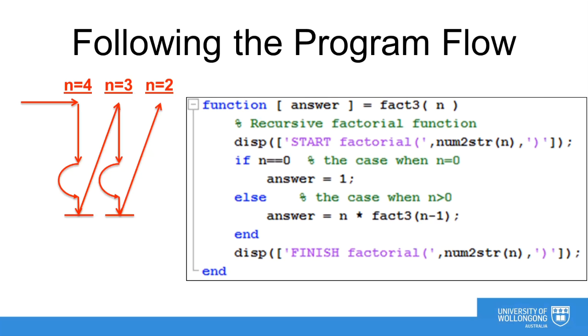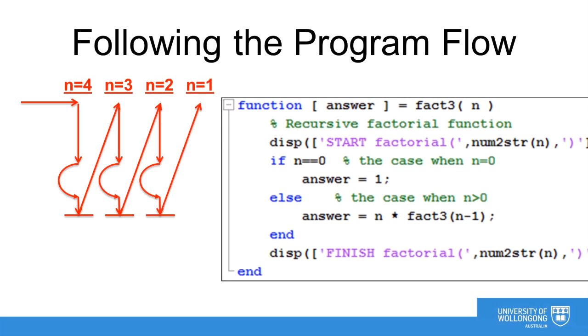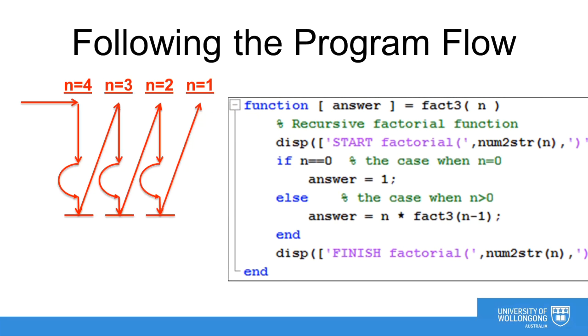The process is repeated for n equals 2, stopping when factorial of n-1 is required. Then the process is repeated again for n equals 1 until factorial of 0 is required.